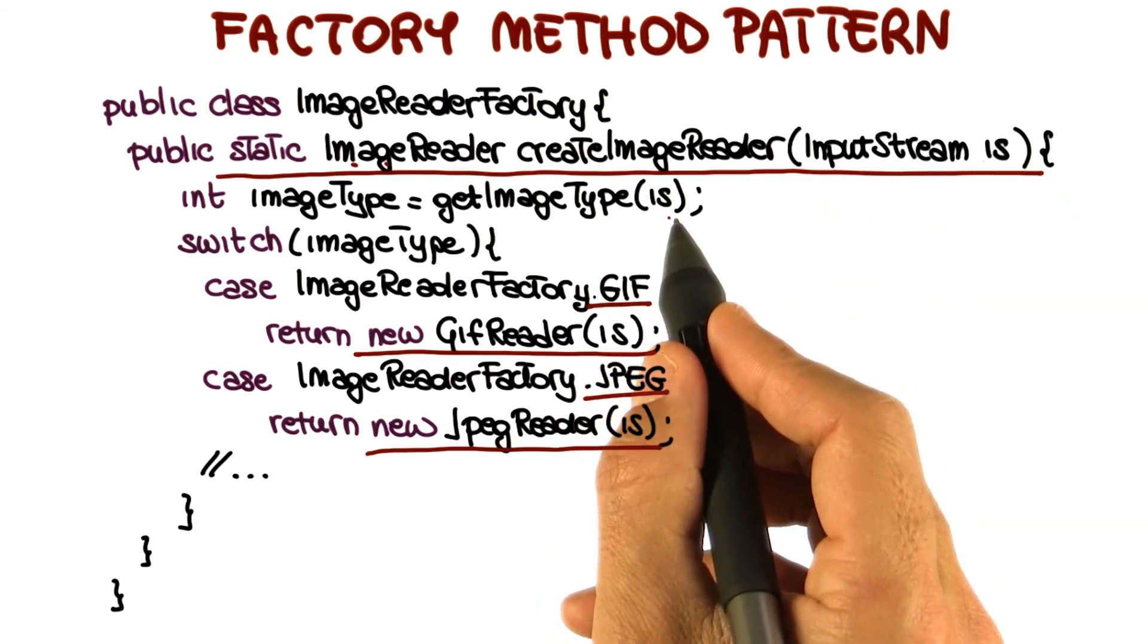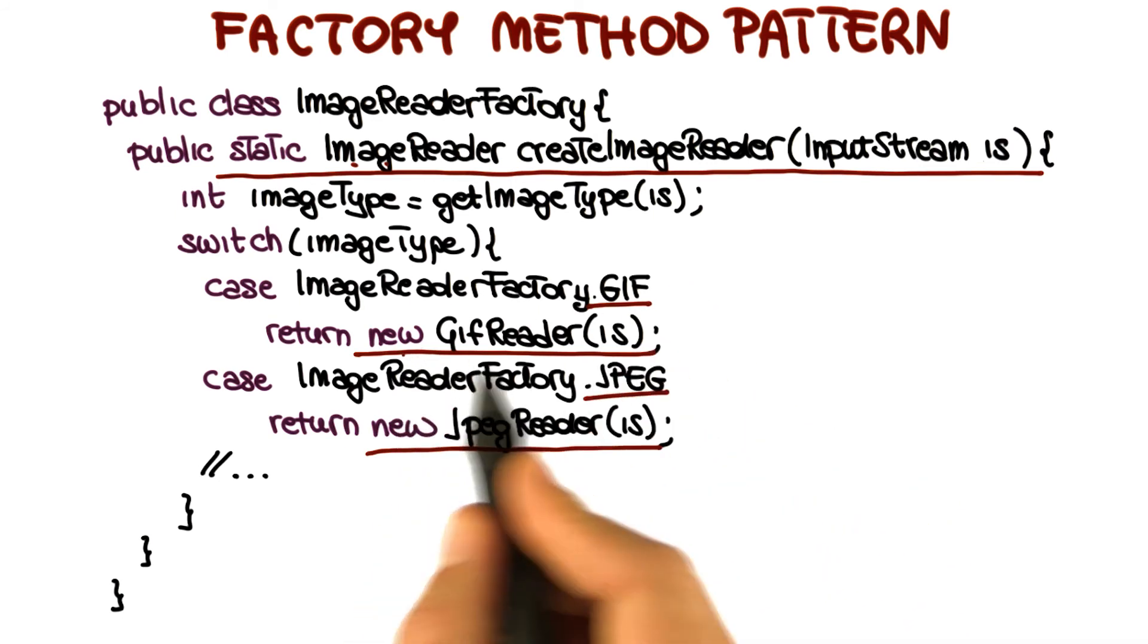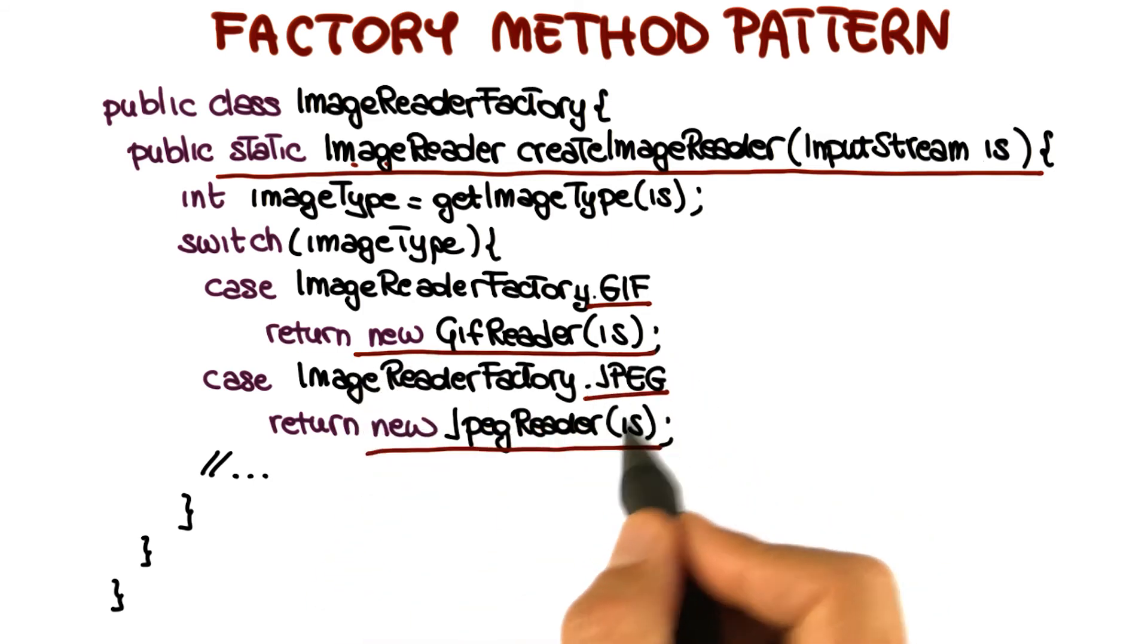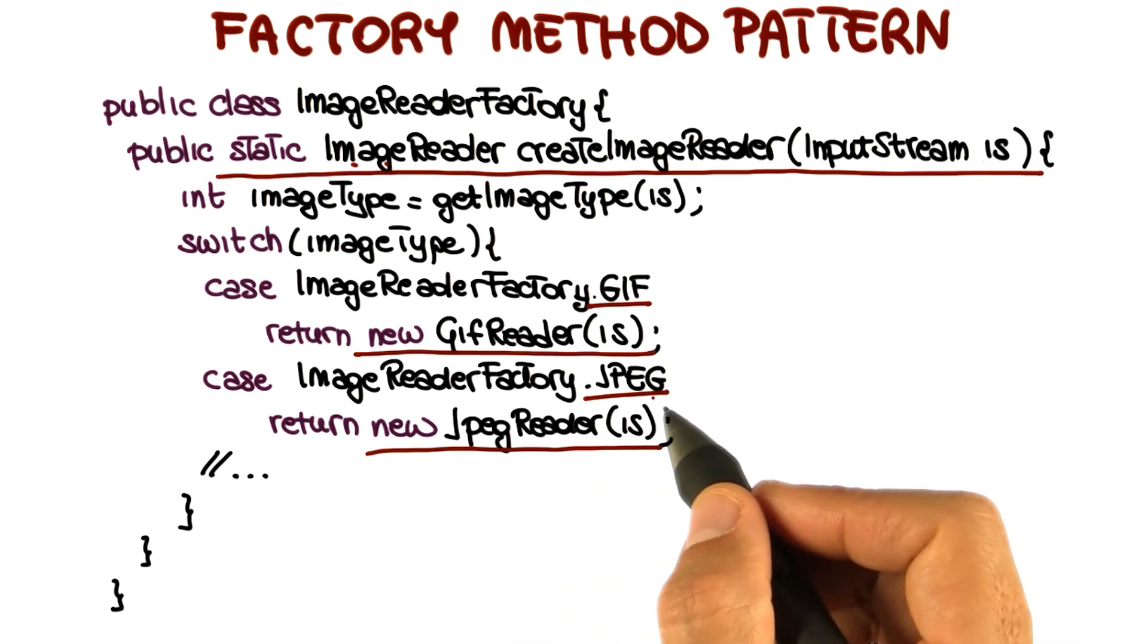Until we read the InputStream, we cannot figure out whether we need to create a GIF, a JPEG, or some other type of image. So what we want to do is simply delegate to these classes the creation of the object once we know what type of object needs to be created. Perfect example of application of a factory method pattern.